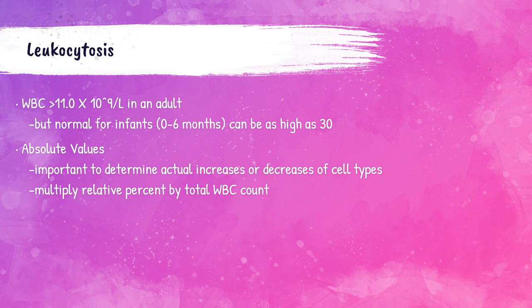When doing a differential, we count and differentiate the white blood cells out of 100. For example, let's say we counted 85 neutrophils, 12 lymphocytes, and 3 monocytes — those would be their relative counts. The absolute white blood cell count takes into account the patient's total white blood cell count. If the white blood cell count was 5 times 10 to the 9th power per liter, to get the absolute count you would multiply 0.85 by 5, giving 4.25 — that is the absolute count of neutrophils.